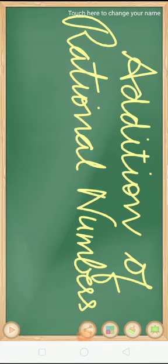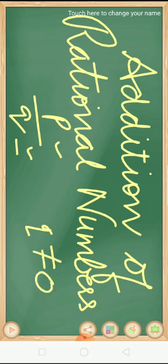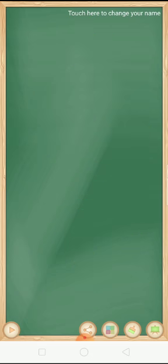Hello students, hope you all are doing well. I am back with another video in which we are going to do addition of rational numbers. We will study how we have to add rational numbers. As you all know, rational numbers are the numbers which are in the form of p upon q, where p and q are integers and q is not equal to 0 — that is, the denominator is not equal to 0.